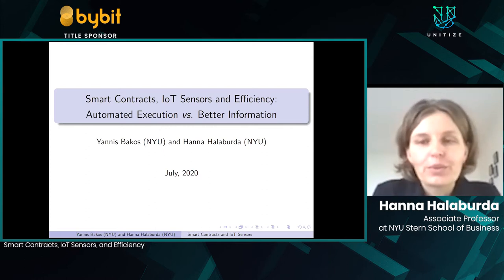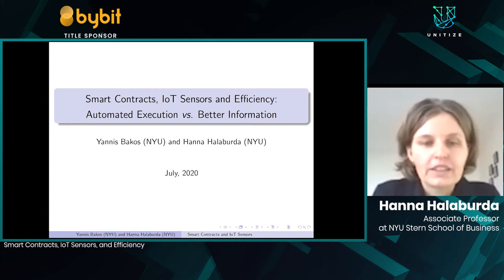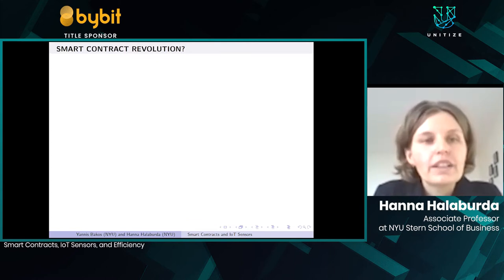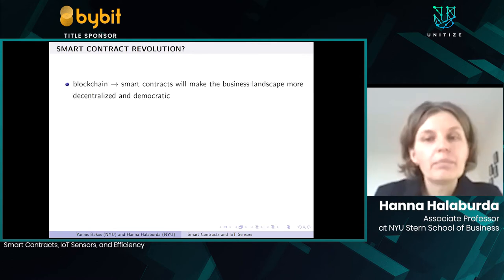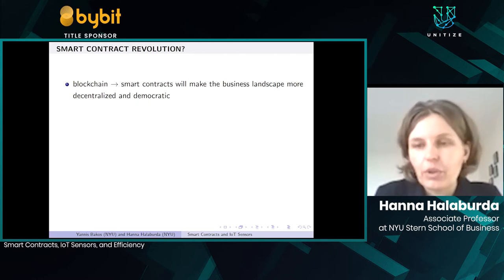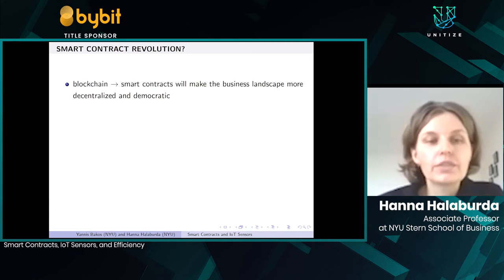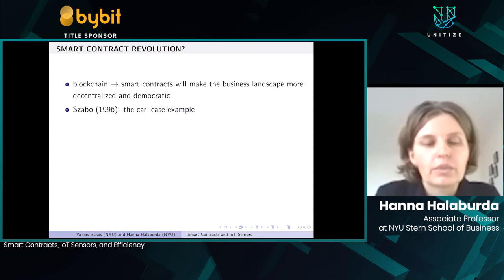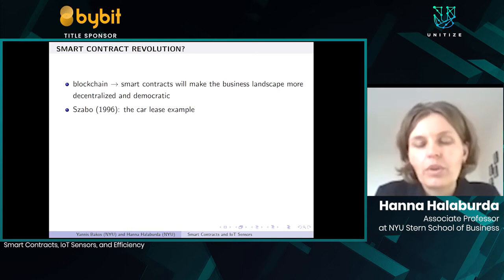Thank you very much for the opportunity to share this research. I'm Hanna Halaburda from NYU Stern, and this is joint research with Yanis Bakos, also from NYU Stern. The huge interest in blockchain is closely related to the promise of smart contracts to change interactions and make the business landscape more decentralized and democratic. The concept of smart contracts comes from earlier times than Bitcoin's blockchain, going back to 1996 and Nick Szabo's definition, including the now seminal example of a car lease.